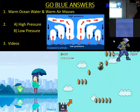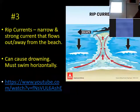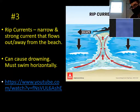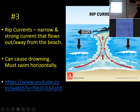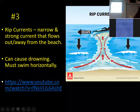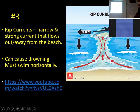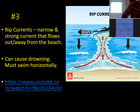So if you're ever in a rip current, make sure to write this all out — this is for number three in the go blue. You do not want to swim back against the current. You won't be able to swim back. You need to swim sideways, swim parallel. Calmly swim parallel until you are out, and then swim back — but don't swim against the current because you'll get exhausted and could drown. Don't panic. You must swim horizontally. This is a narrow, strong current that flows out and away from the beach.